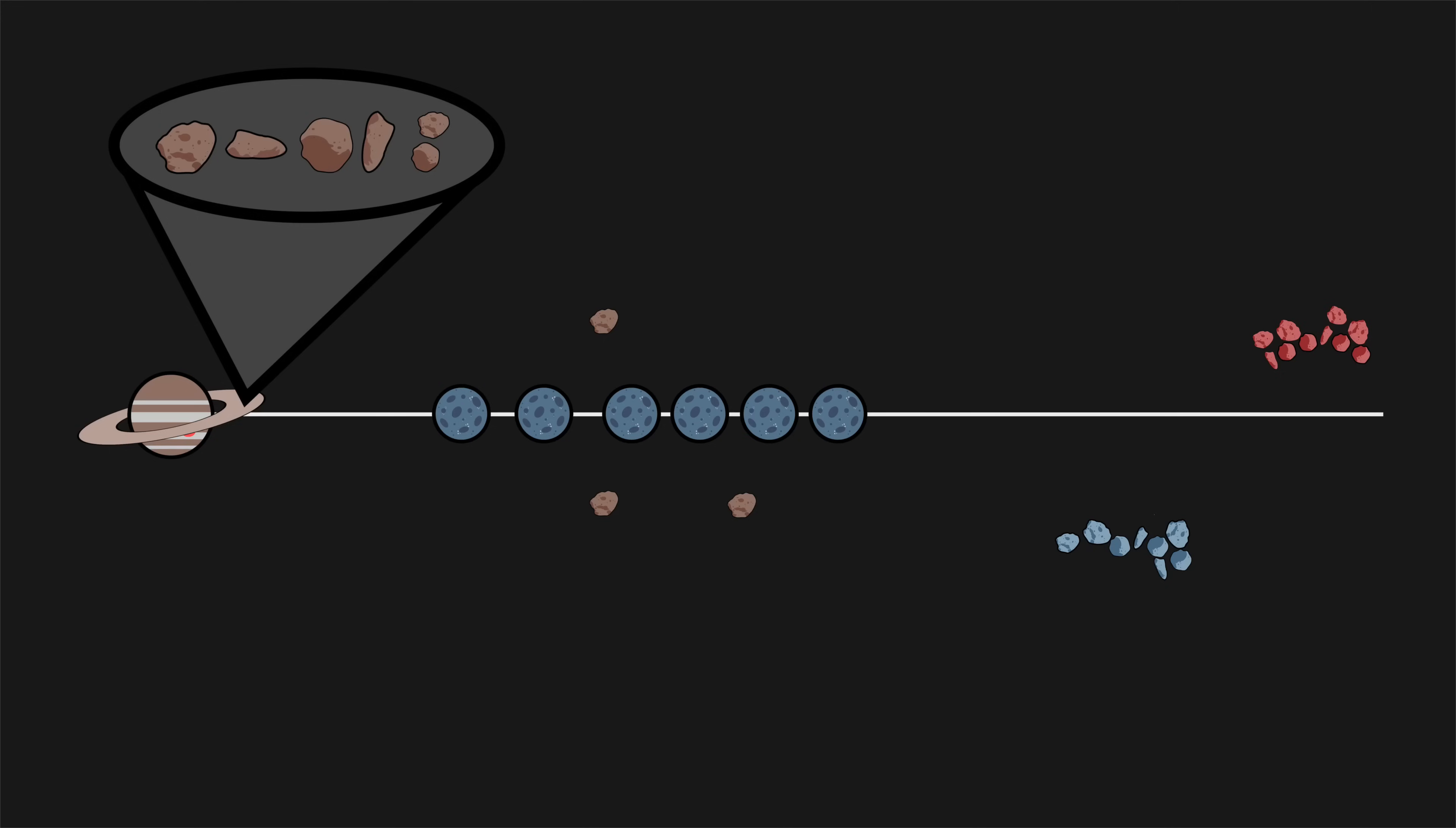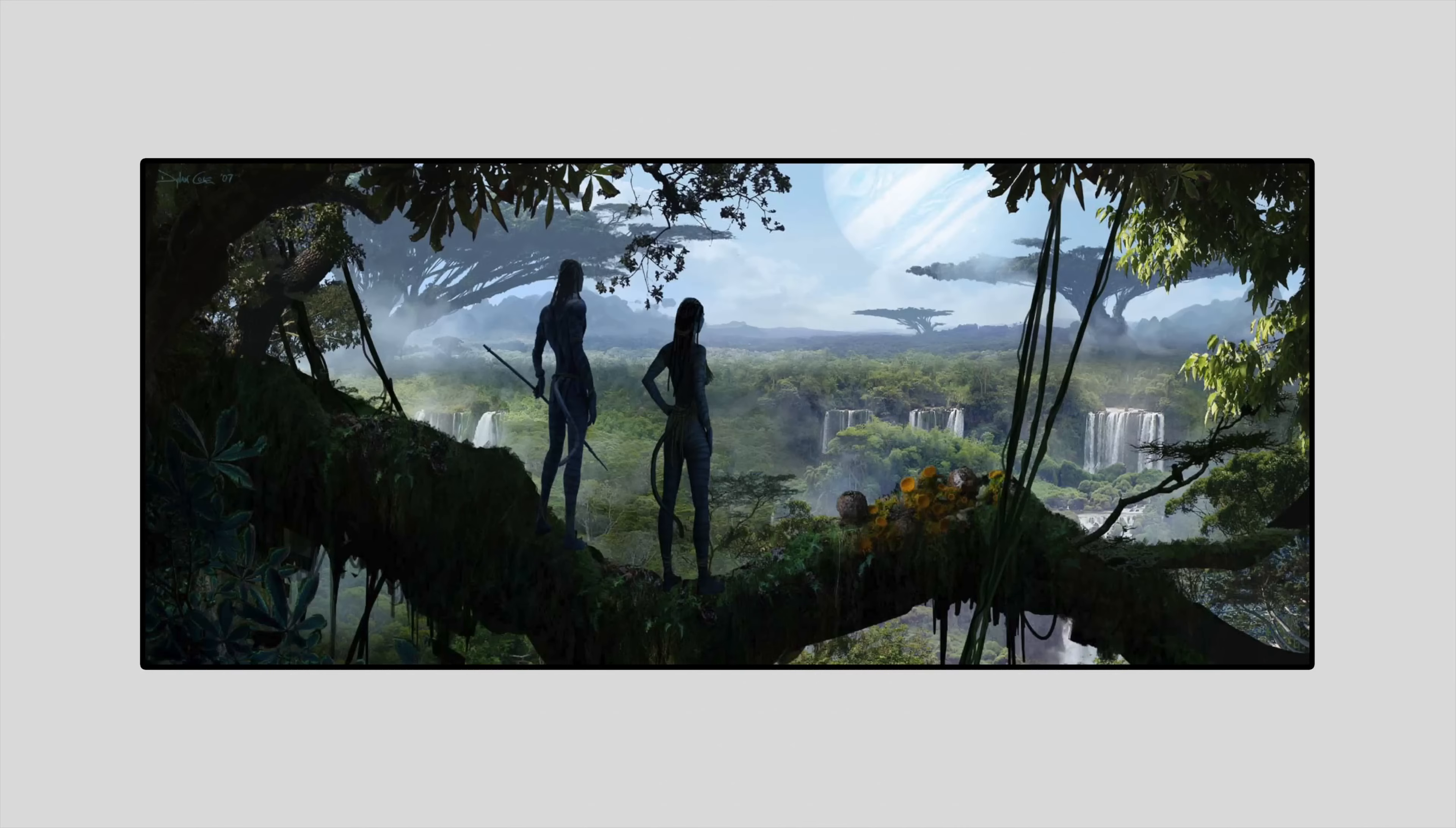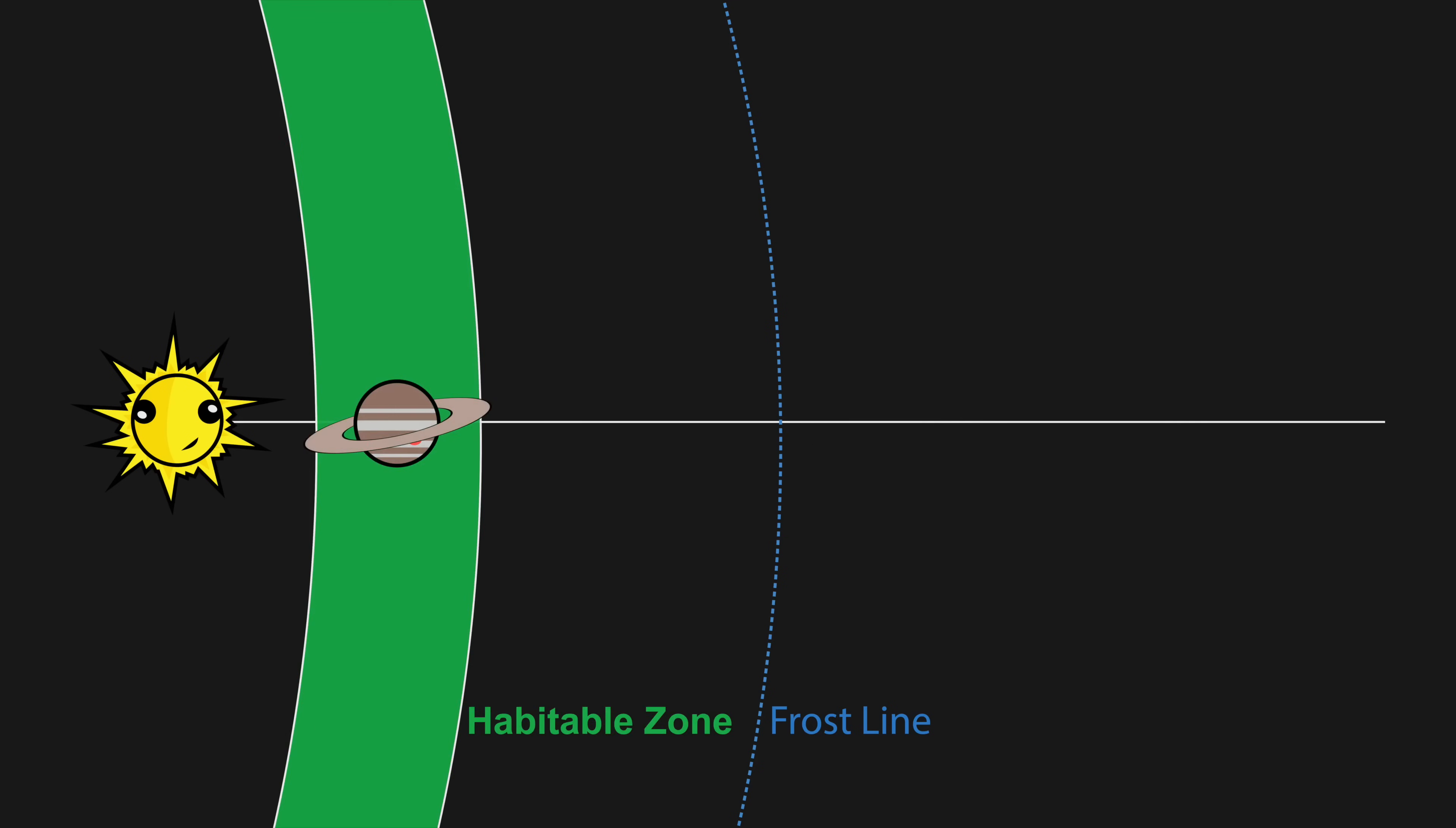But let's face it, you're here for one thing, and one thing alone. So, if we want to replicate James Cameron's Pocahontas, we're going to need to move our gas giant into the habitable zone, and give it an Earth-like moon.